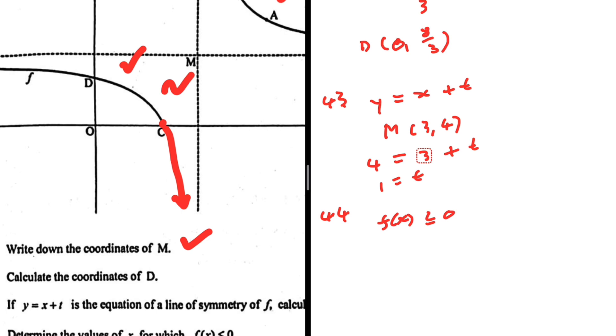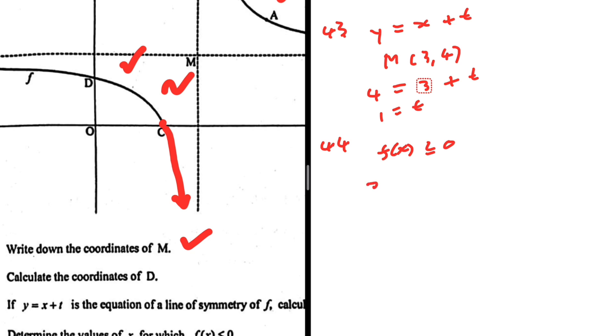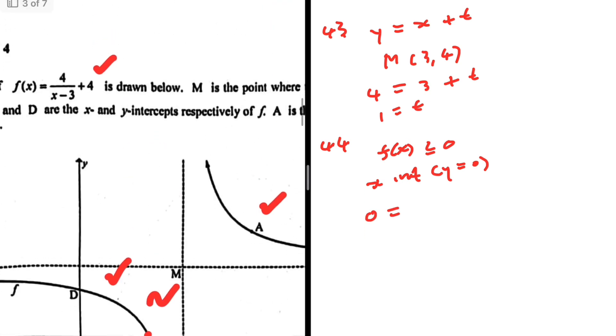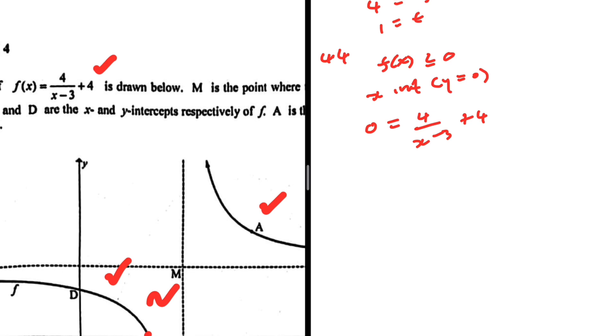So that part starts at C, which is the x intercept. So let's start by finding the x intercept. Y equals 0. So we're going to have 0 equals, what is f(x)? 4 over x minus 3 plus 4. So minus 4 equals 4 divided by x minus 3. So minus 4x plus 12 equals 4. Minus 4x equals minus 8. X equals 2.